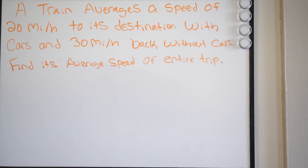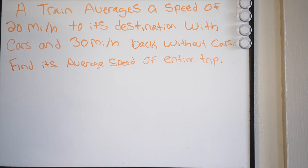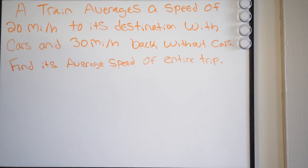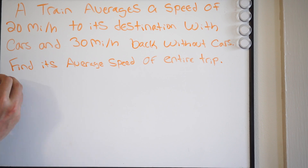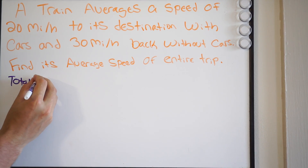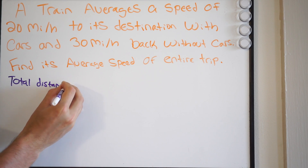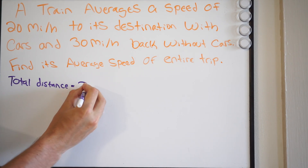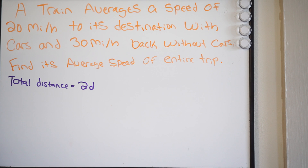It says a train averages a speed of 20 miles per hour to its destination with cars, and 30 miles per hour back without cars. They want to know what the average speed of the entire trip was. So we have to start defining some of our knowns. We don't know the distance, but we know it went to its destination and back. So if we call the distance D, the total distance is going to be 2 times D — there and back.